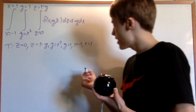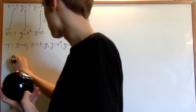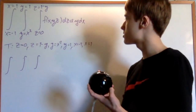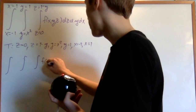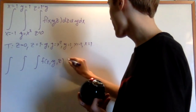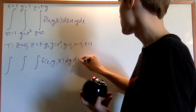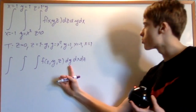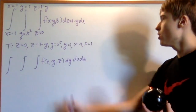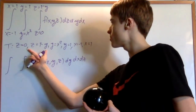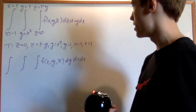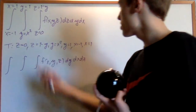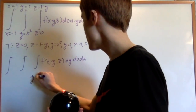Now let's go ahead and change the order of integration. We want the order dy dx dz instead. The question is: what is y changing between? Let's look at the equations that involve y: z equals one minus y, y equals x squared, and y equals one. Now y equals one isn't even important here — the only important ones are y equals x squared and y equals one minus z.